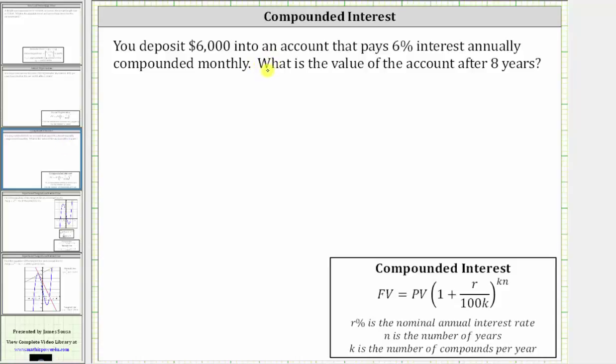You deposit $6,000 into an account that pays 6% interest annually, compounded monthly. What is the value of the account after eight years?